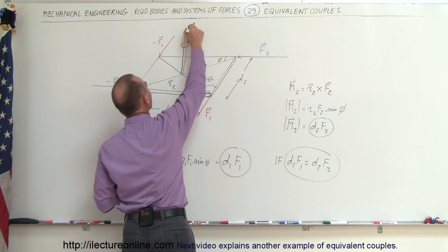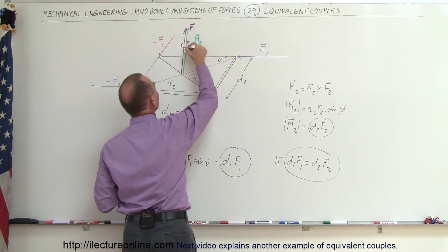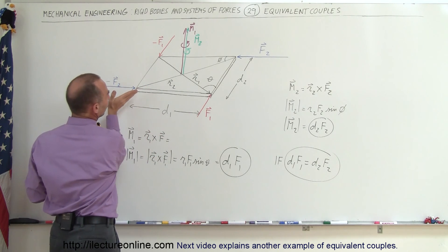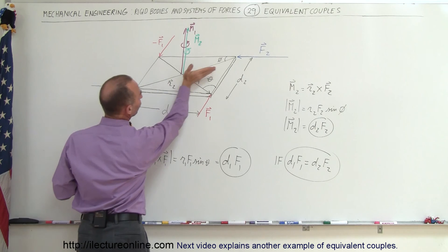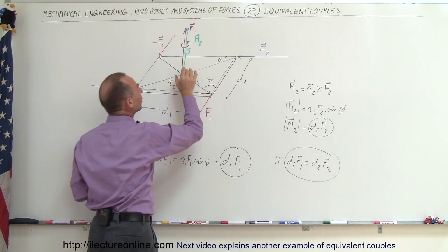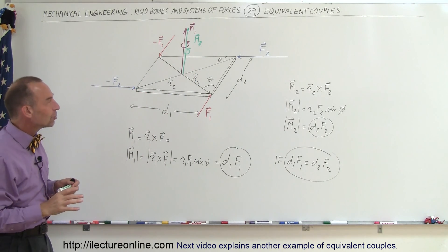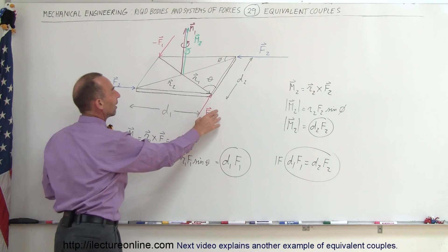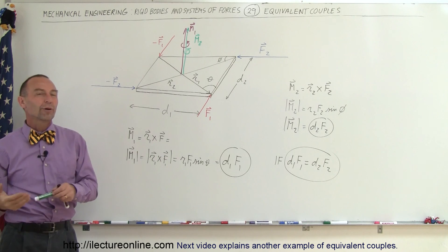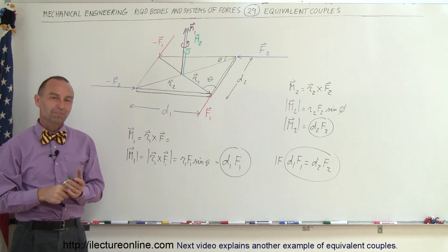So if I draw another moment right here, and this is moment two, which also will have a counterclockwise sense because again, if you take your right hand rule, you point your fingers in the direction of R2 and then you curl your finger in the direction of F2, you can see that the moment will be pointing upward. If these two moments have the same direction and the same magnitude, then the couples F1 negative F1 and F2 and negative F2 are equivalent. And that's by definition the equivalent couples.